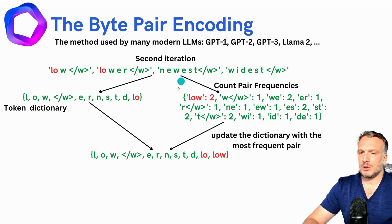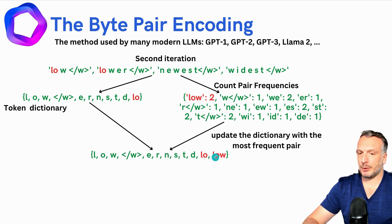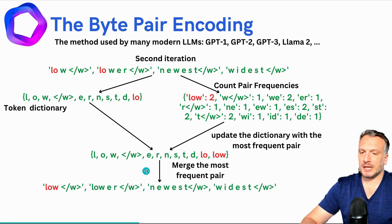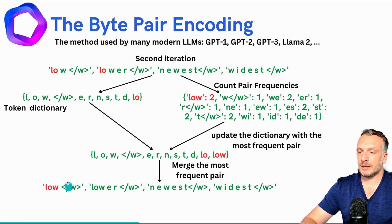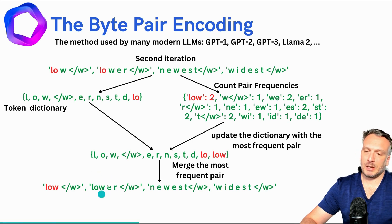I take one of the pairs of tokens with the highest frequency — you will notice that there are other pairs with similar frequency, but I take the first one — and include it into the vocabulary. So now as part of the vocabulary I have L, O, and additionally L, O, W. I added two new tokens to the vocabulary. Now I'm going to merge again the most frequent pair. I replace in the original text the character-level tokens with the aggregated token L, O, W, removing the white spaces between characters to capture that it is only one token.